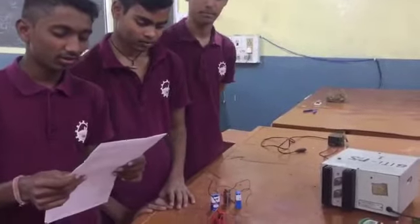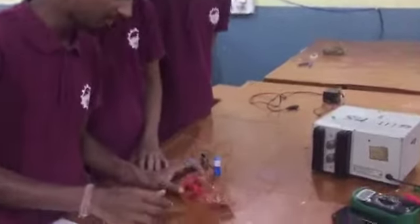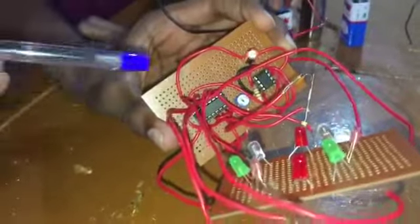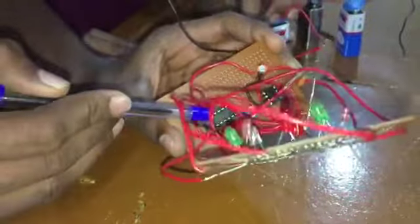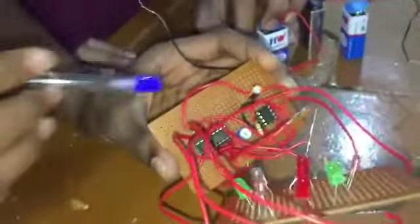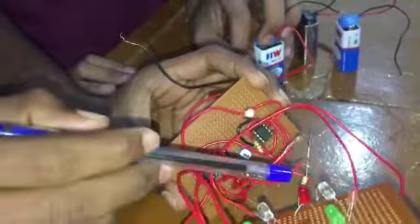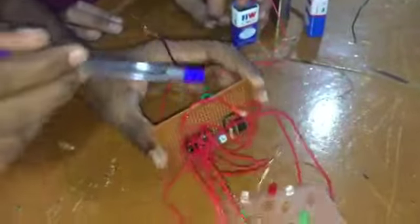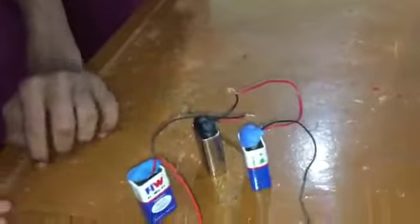This is a circuit we have used 555 IC trimmer and we have used IC 4017 IC, 16 pin. A capacitor of 100 microfarad, 10k variable resistor and 1k resistor, 0.1 microfarad, 27 volt batteries and 8 LEDs.